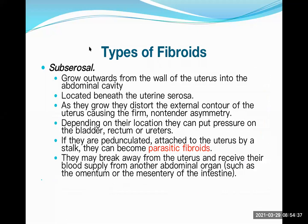The second type is subserosal — right below the serosa or peritoneum, towards the muscle. It grows outwards from the wall of the uterus into the abdominal cavity. As they grow, they disturb the external contour of the uterus, causing a firm, non-tender asymmetry detectable during examination. Depending on location, they can put pressure on the urinary bladder, rectum, or ureter.